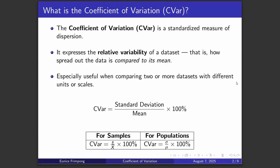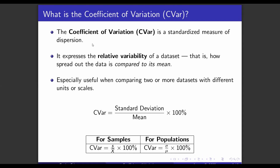What is coefficient of variation? The coefficient of variation is a standardized measure of dispersion. It expresses the relative variability of a data set — that is, how spread out the data is compared to its mean. It is especially useful when you are comparing two or more data sets with different unit scales.